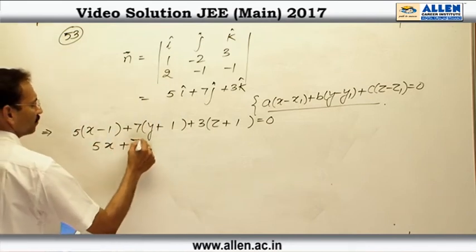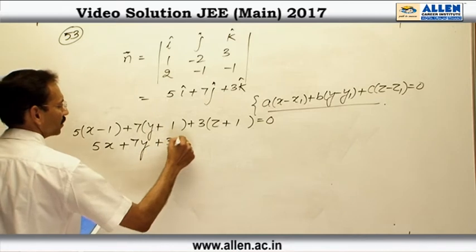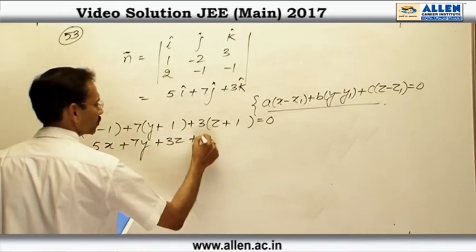Let us give it a finishing touch: 5x + 7y + 3z + 5 = 0.